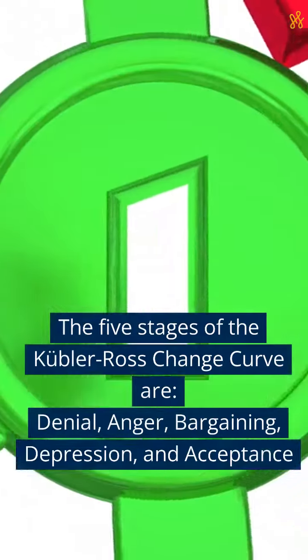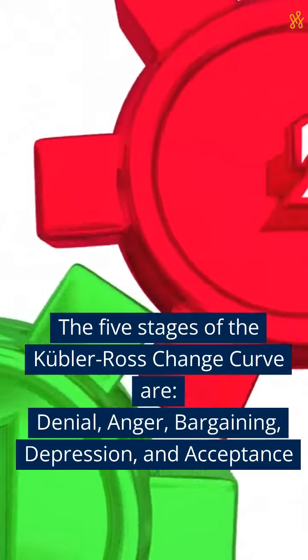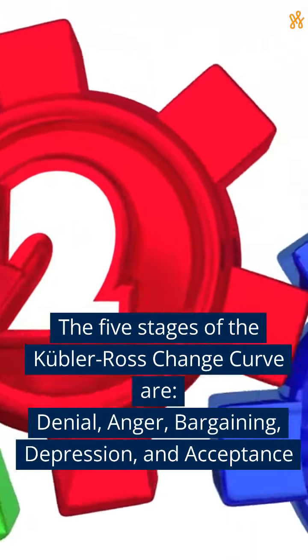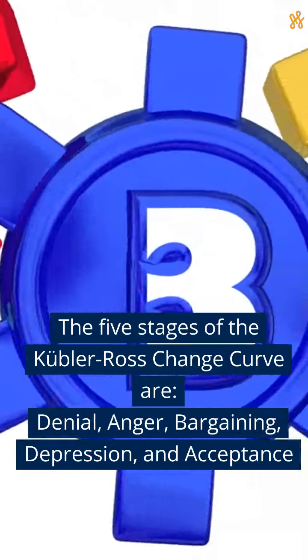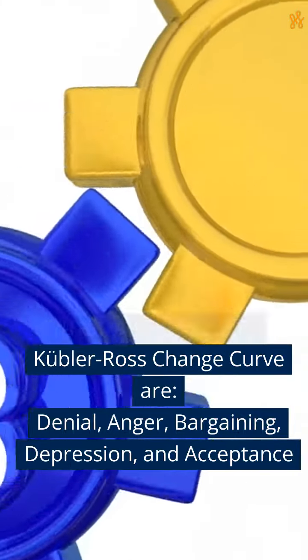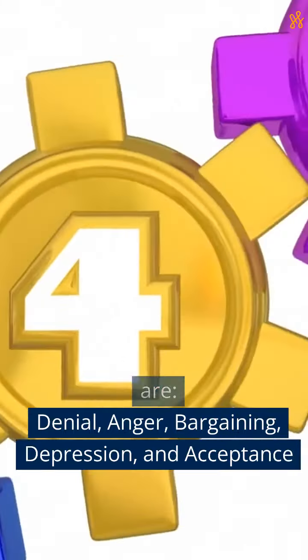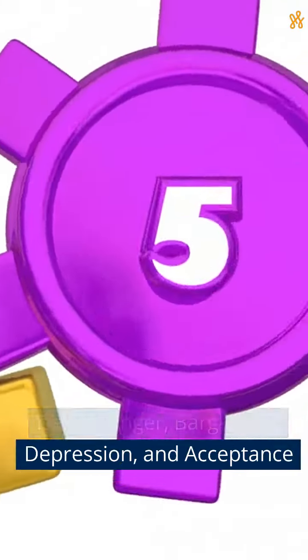The five stages of the Kubler-Ross change curve are denial, anger, bargaining, depression, and acceptance.